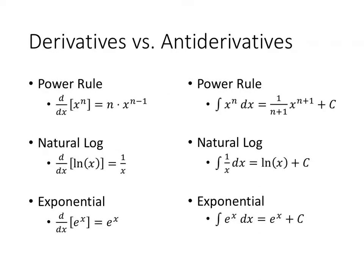Just like we have rules for derivatives, we have corresponding rules for antiderivatives. The derivative of x to the n is n times x to the n minus 1 — we bring down the power and subtract 1. So the power rule for antiderivatives is the opposite: we add 1 to our original power, and then we divide by that new power. And then don't forget to include your plus c.